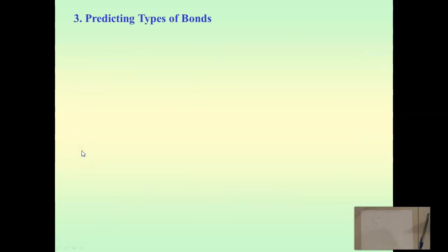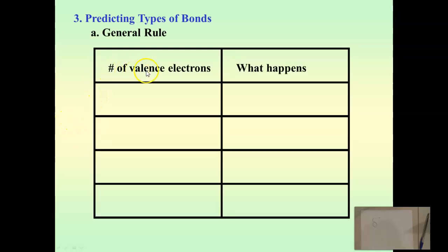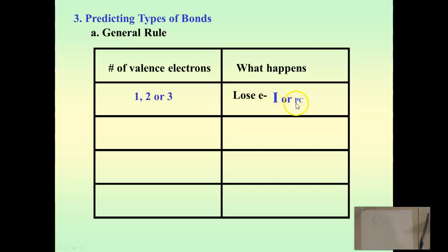Now, we've got three different types of bonds. How can we look at atoms and say what type of bond it's going to be? Generally, if an atom has one, two, or three valence electrons, it's very hard to gain electrons to get an octet. So these atoms will lose their electrons — either all the time, forming an ionic bond, or most of the time in a polar covalent situation.